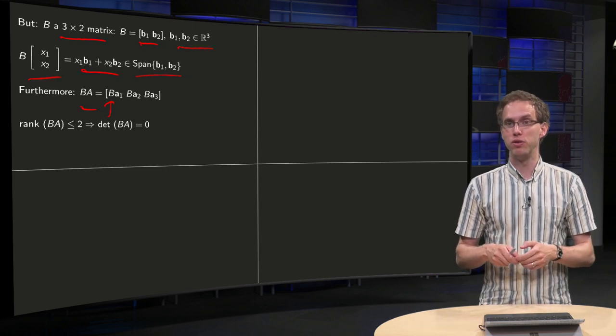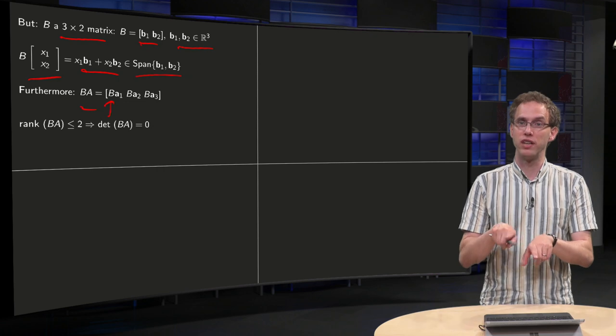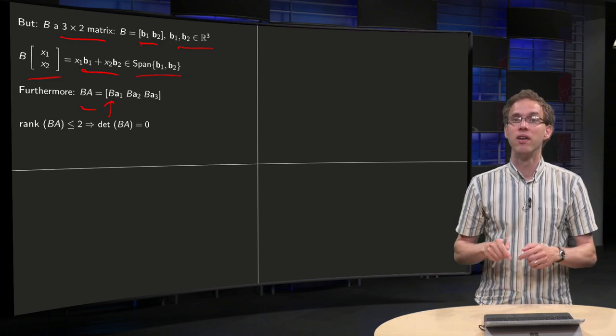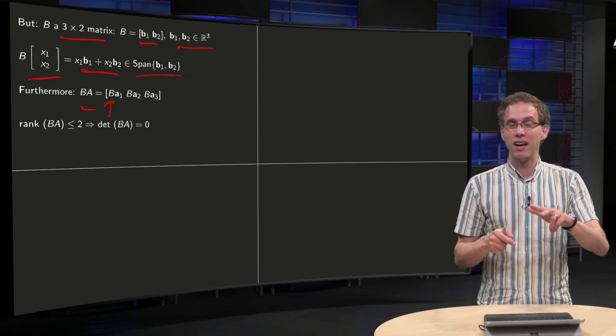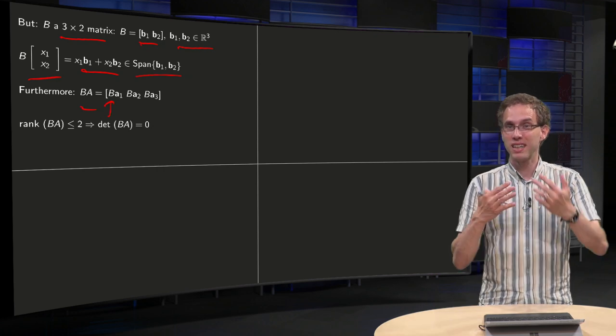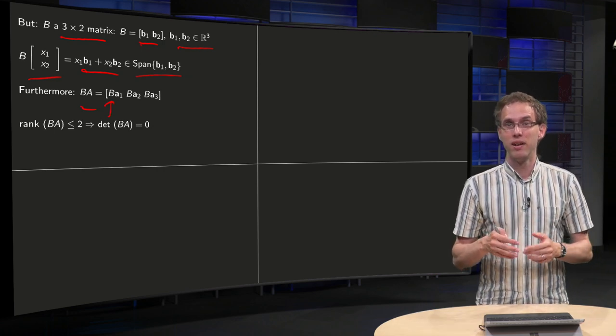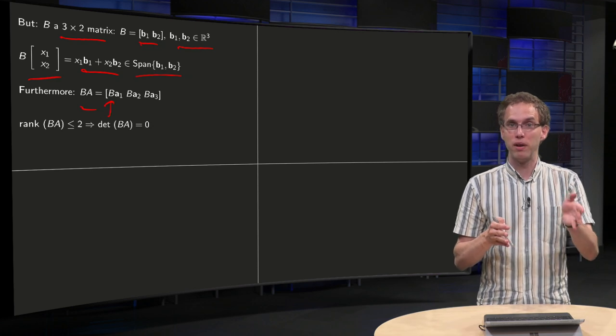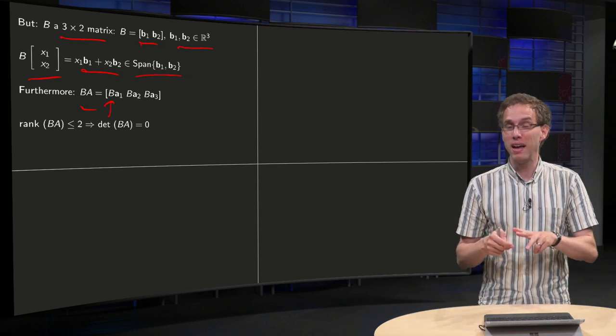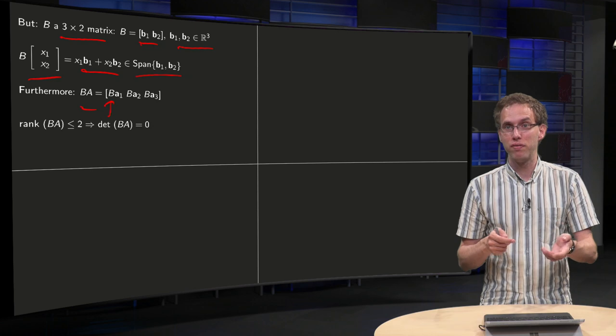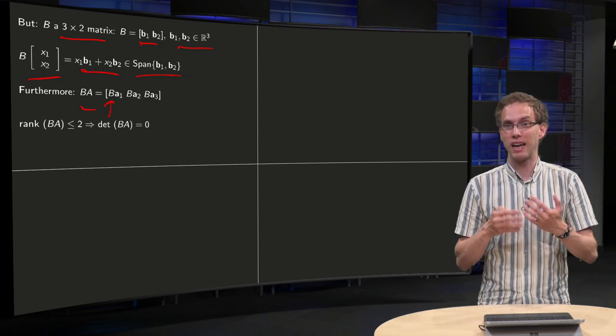So those three columns of B times A are all in the plane spanned by B1 and B2. And if B1 and B2 would be linearly dependent, it's even worse, and they are all three on a line. So in particular, they are all on a plane or in a line. In particular, the set of BA1, BA2, and BA3 will be dependent, because we have three vectors and they are all three in a plane, so they can never be independent.